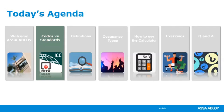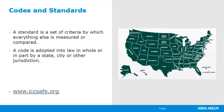First, we'll talk about the difference between codes versus standards. A standard is a set of criteria by which everything else is measured or compared. For example, in our industry for commercial doors and hardware, NFPA 80 is the standard for fire doors and hardware. It won't tell you where you need a fire door and hardware, but it will tell you if you need one, what it needs to look like, act like, and be like. Other standards include ANSI A117.1, the standard for making buildings accessible. These standards are referenced in the code, and by virtue of that reference, the standard becomes part of the code and part of the law.